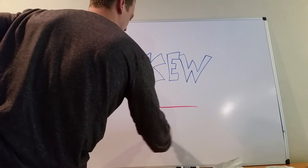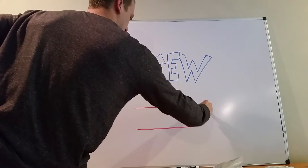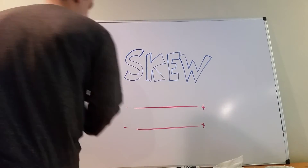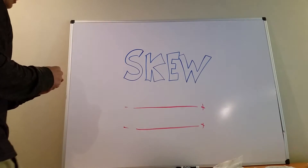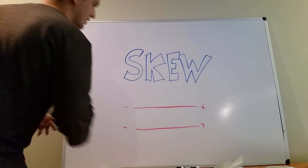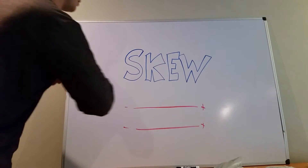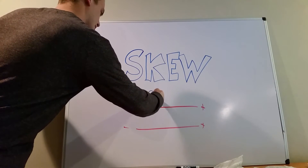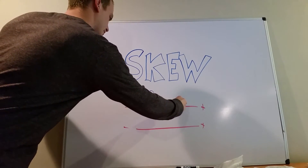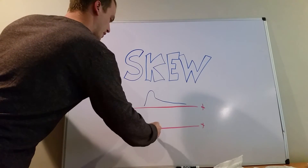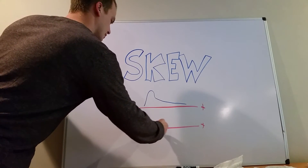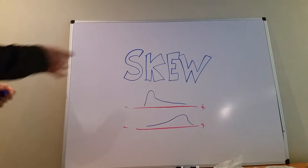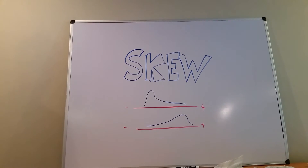So let's say we have a number line, with a positive side and a negative side. You only have two different varieties of skewedness. You can have a variety that looks like this, skewed out to the right, or you can have a variety that looks like this, where it's skewed down the left side.